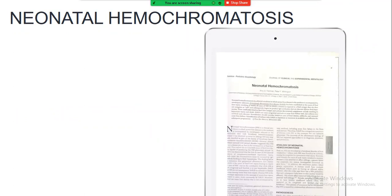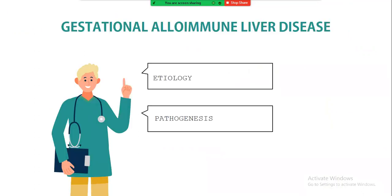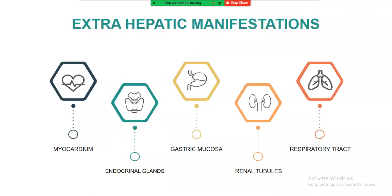I'll put a link to a good article in the description below. Etiology: GALD is an alloimmune disease where maternal IgG crosses the placenta from around 12 weeks of gestation, damages the fetal liver, and many children are born with cirrhosis or complete liver failure. Extrahepatic iron deposition occurs in the myocardium, endocrine glands, gastric mucosa, renal tubules, and respiratory tract. Buccal biopsy is commonly used to demonstrate iron overload.